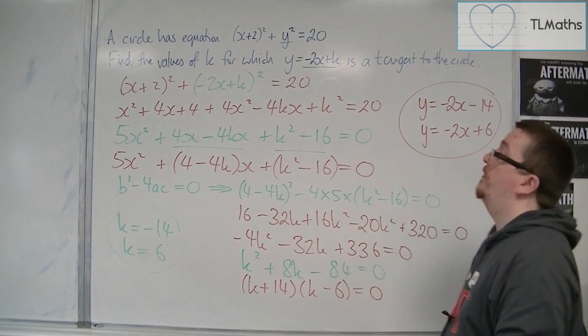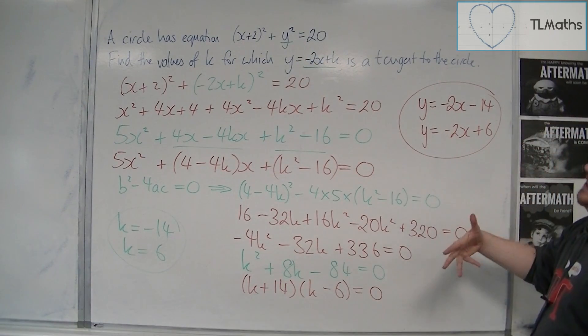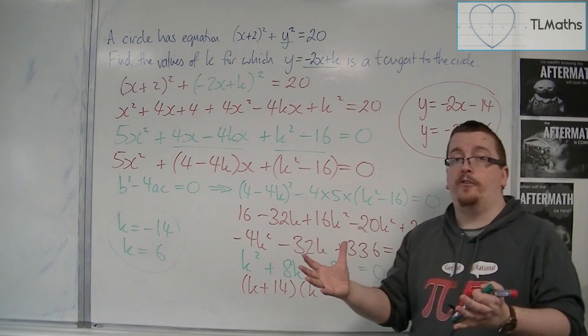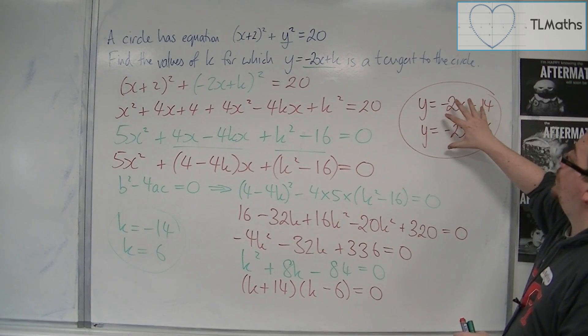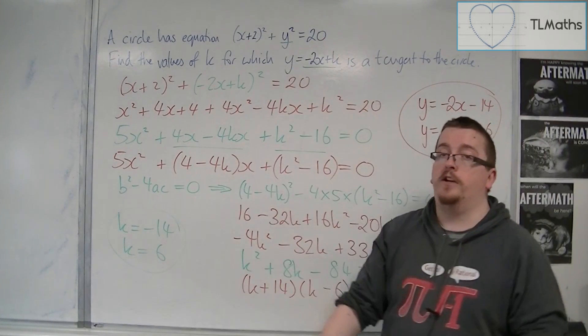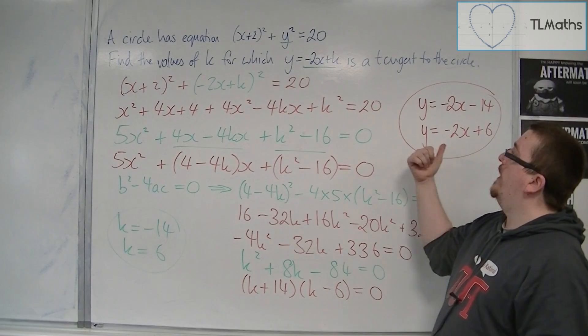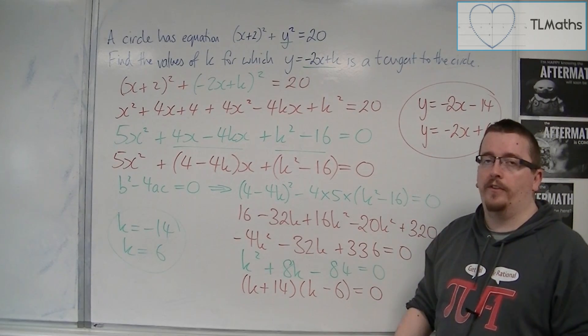And it will probably be well worth you looking it up on Desmos, checking it out on Desmos or some other graphing package like Autograph, putting in those two equations and the equation of the circle and checking that they are indeed tangent lines to the circle.